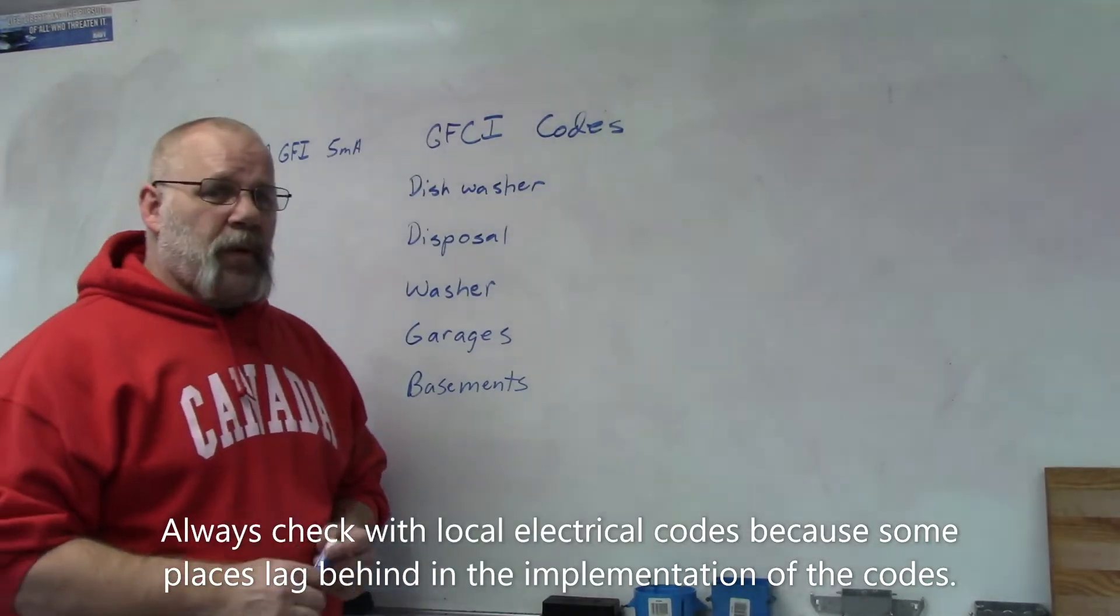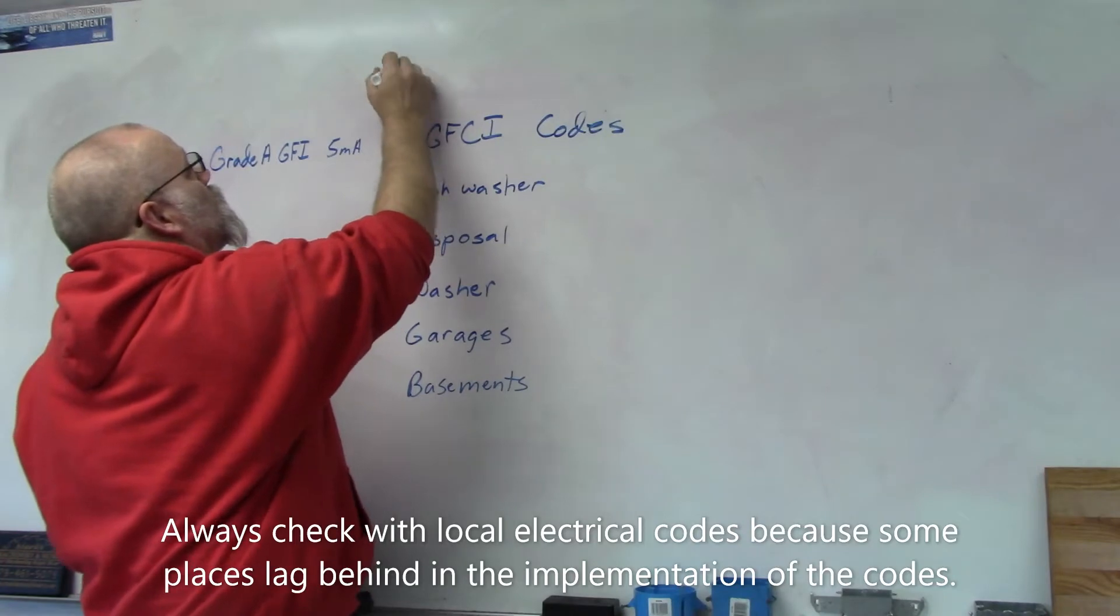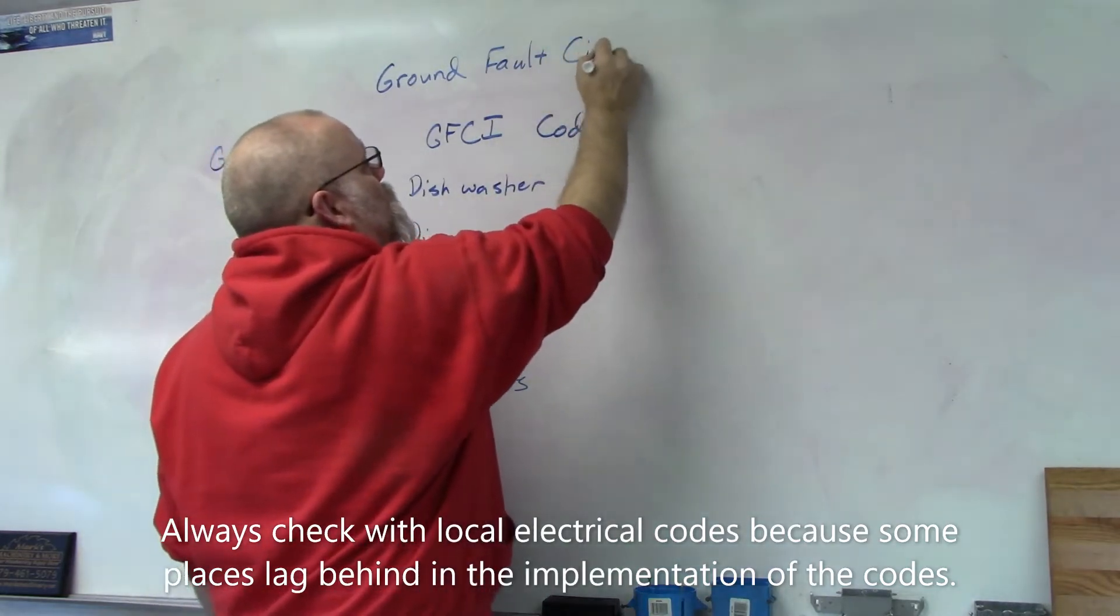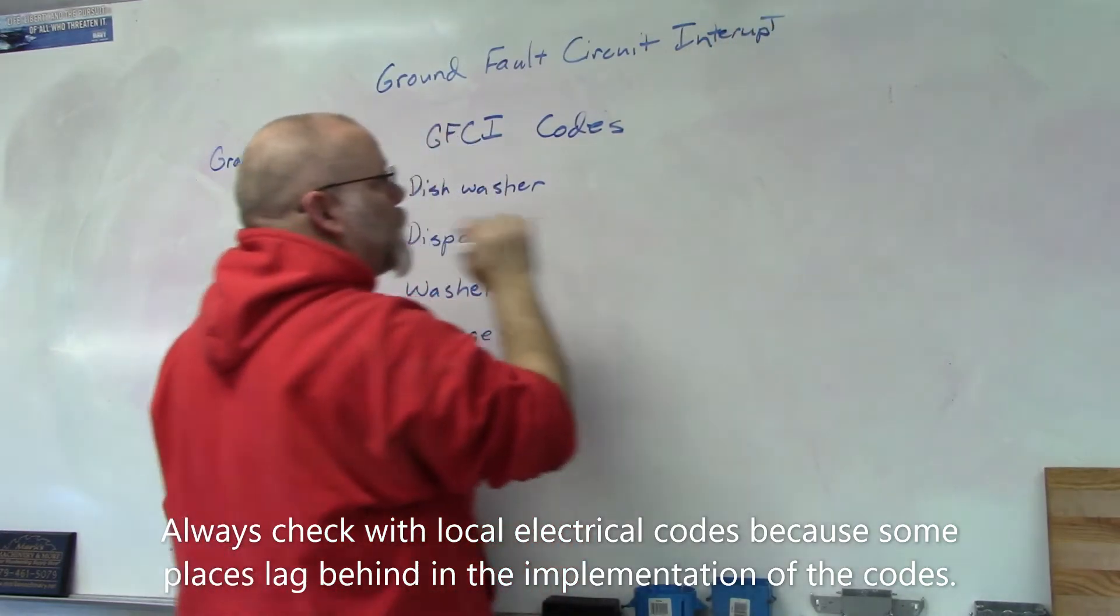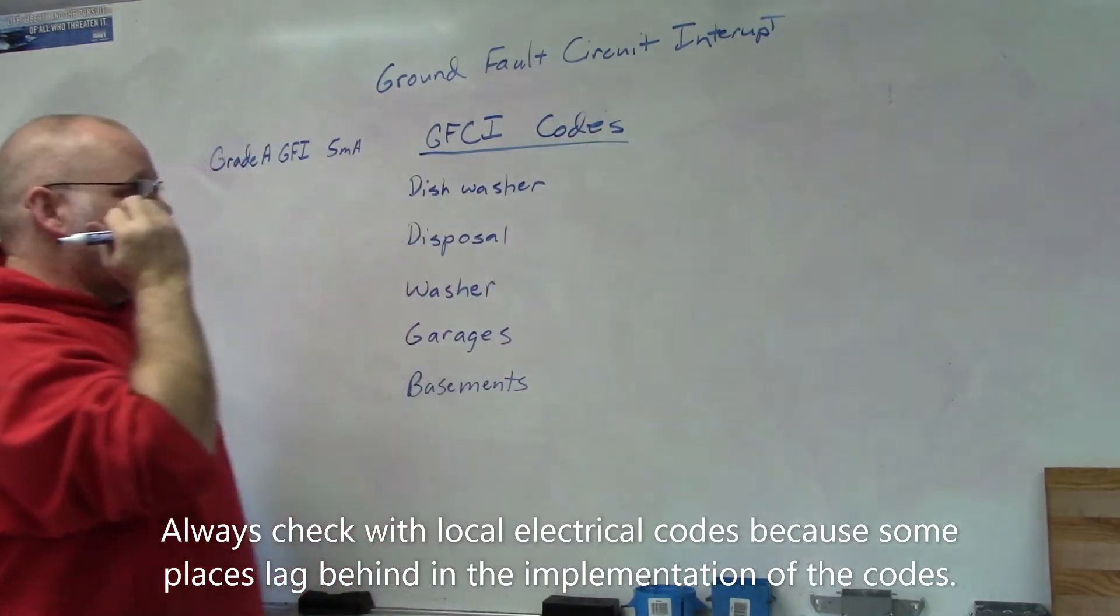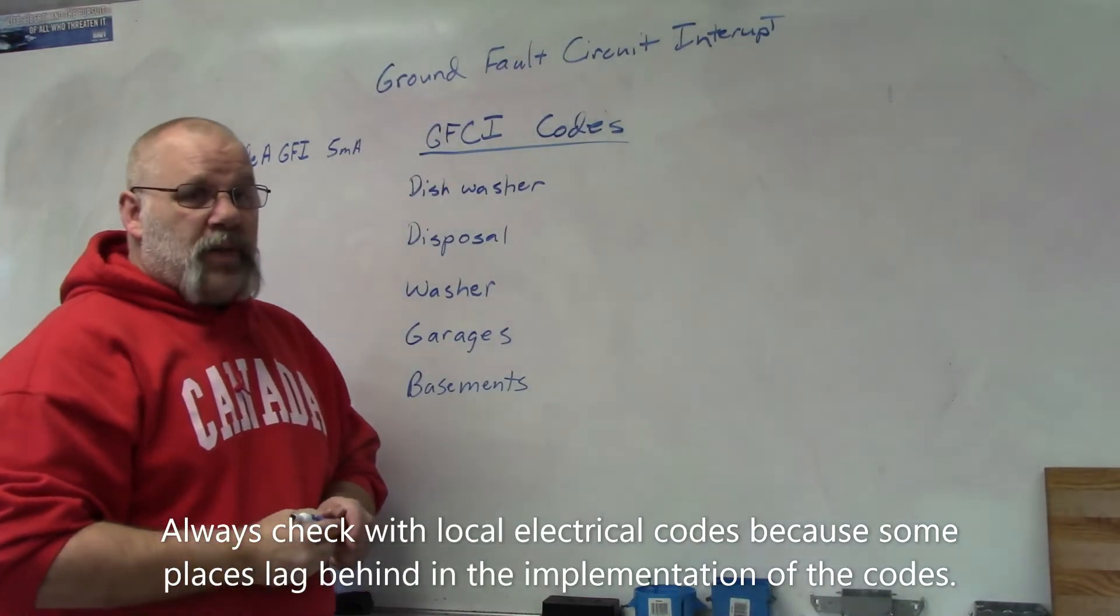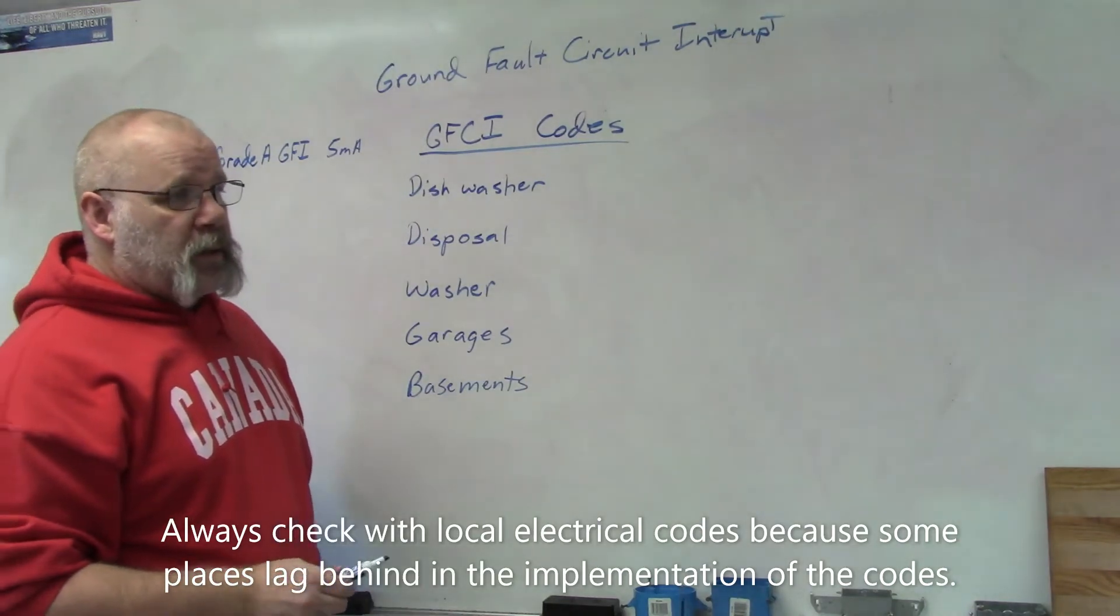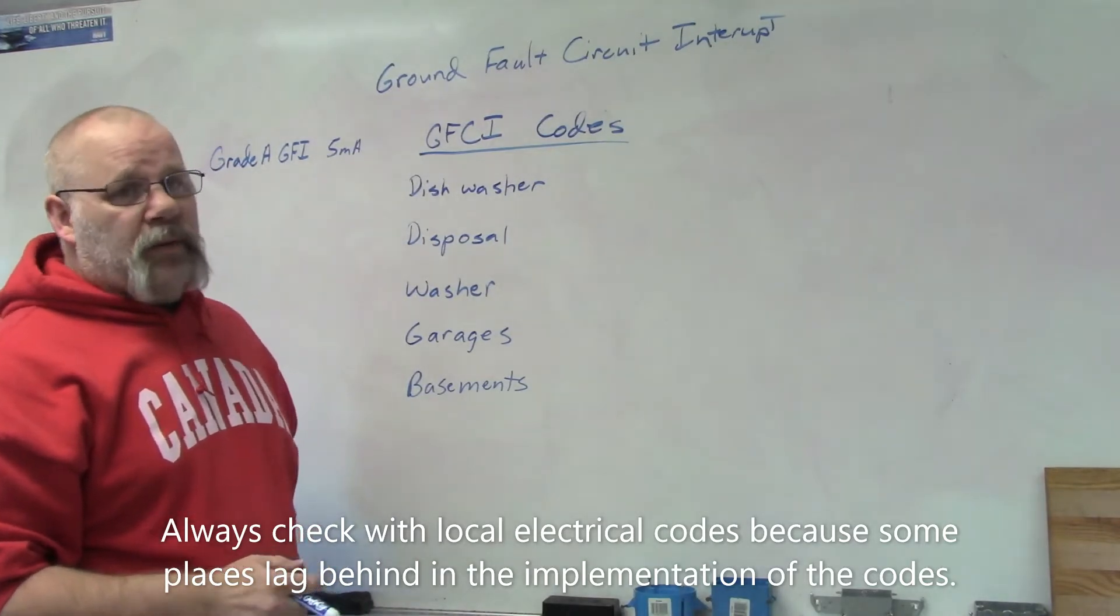Okay, let's talk about GFCIs. GFCI stands for ground fault circuit interrupt. With the new 2020 codes, they're making it so almost everything in your house is going to be on a GFCI. The new codes state that anything within six feet of a water source needs to have a GFCI.